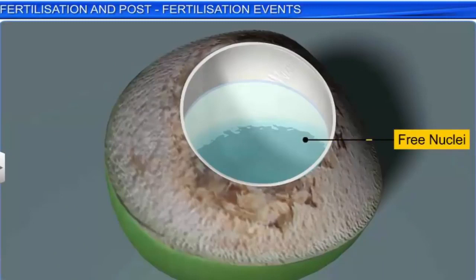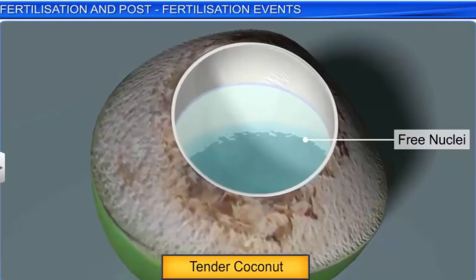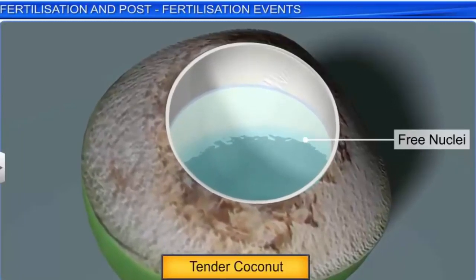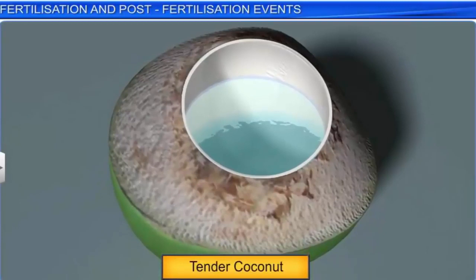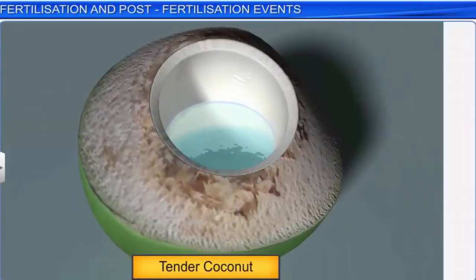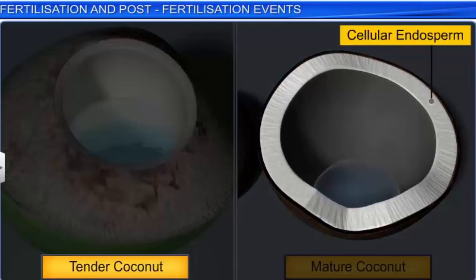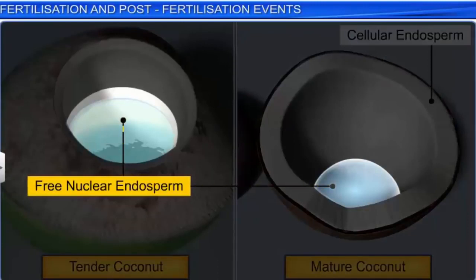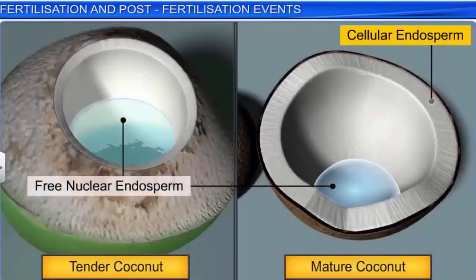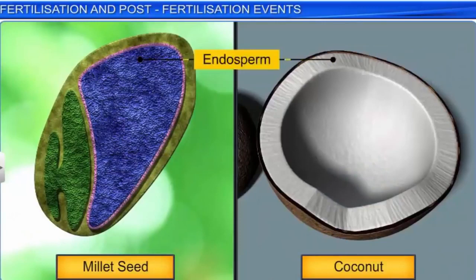Interestingly, the number of free nuclei formed prior and post-cellularization differs greatly. Take the case of a tender coconut fruit, where the coconut water that you see is actually thousands of free nuclei. As the coconut matures, cellularization leads to a decrease in the quantity of water and the formation of the white kernel — the cellular endosperm. Therefore, in the coconut we find both free nuclear endosperm made up of thousands of nuclei, and cellular endosperm. Histological studies have shown that endosperm contains stored food in the form of starch or proteins as in cereals, or oil as in castor or coconut.